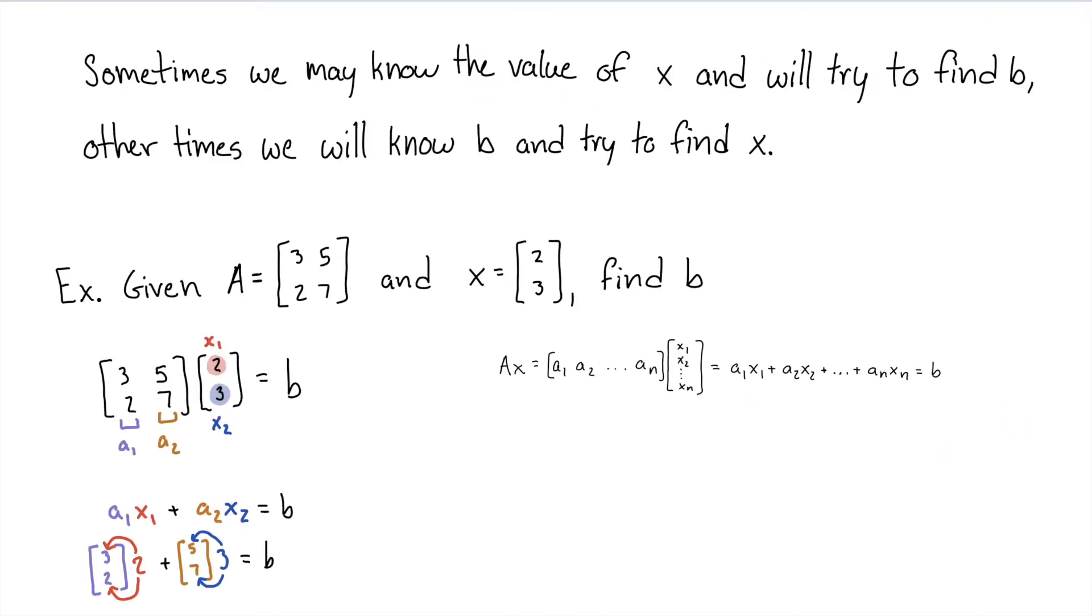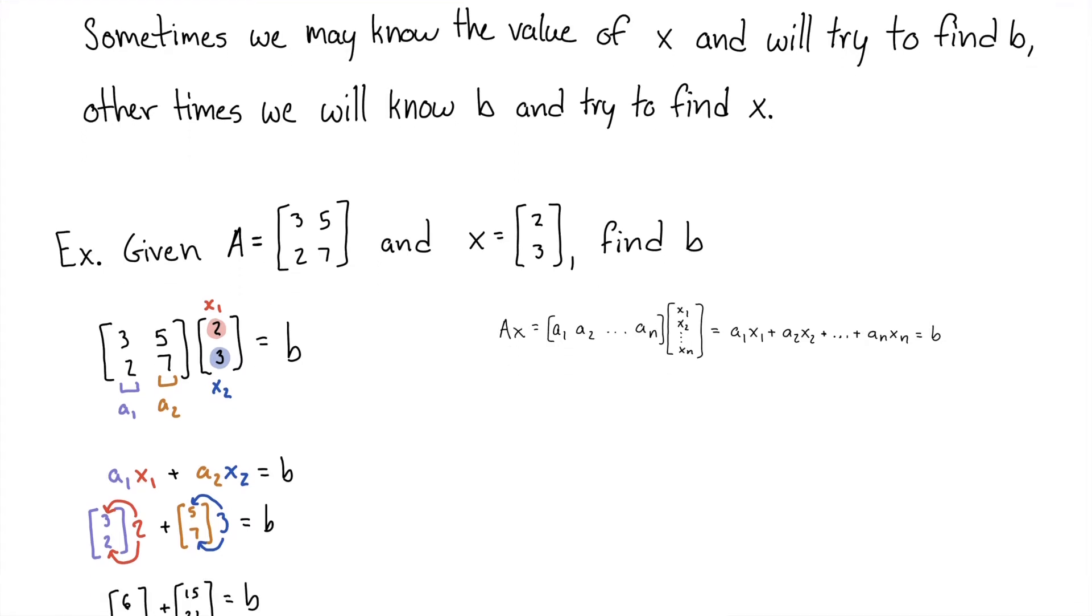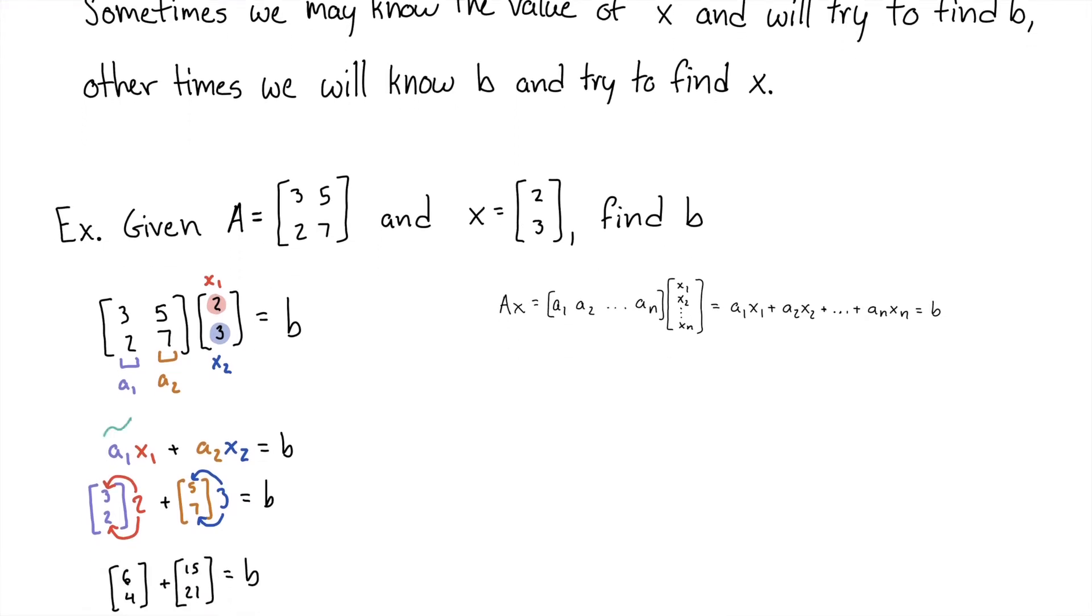For questions that we may encounter relating to AX equals B, sometimes we may know the value of X and then try to find the value of B, or it'll be the opposite. We know B and we'll try to find the value of X. Looking at our first problem, we're given the matrix A and X, and so we were looking for B. We want to turn the two given matrices into this form that we wrote above. We're going to write out our matrices next to each other in the form of A1 X1 and A2 X2.